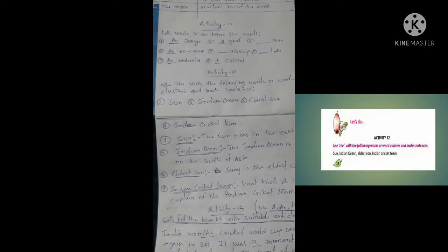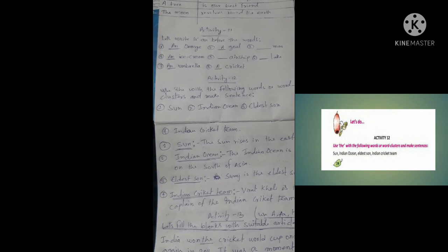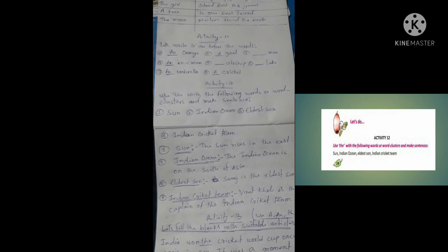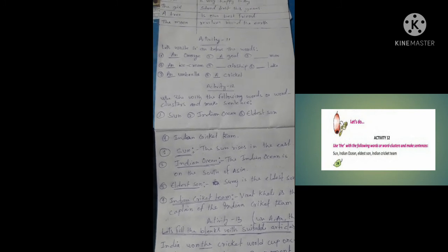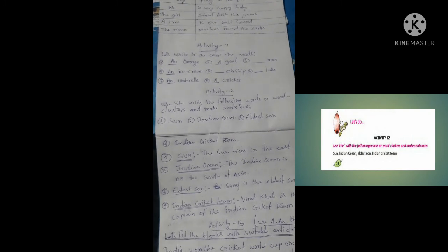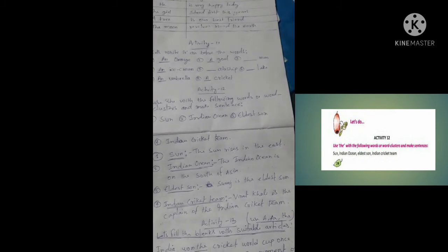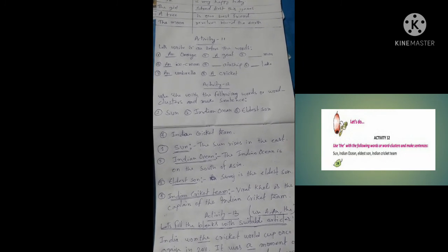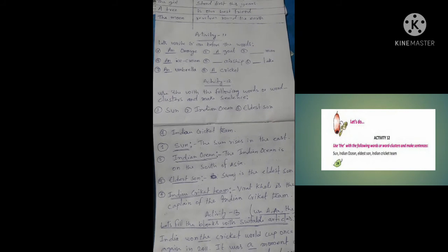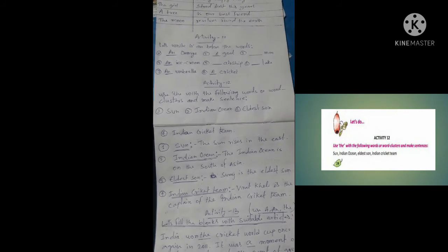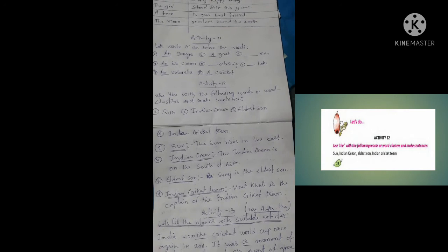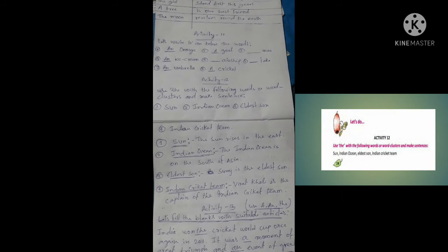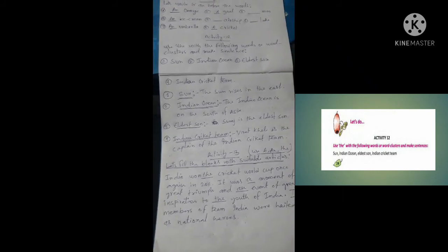So this is one full sentence. Number 1: The sun rises in the east. Number 2: The Indian Ocean is on the south of Asia. Number 3: Suraj is the eldest son. Number 4: Virat Kohli is the captain of the Indian cricket team.